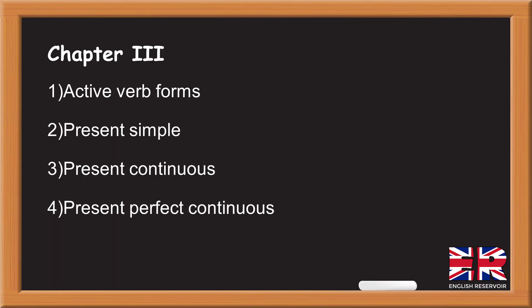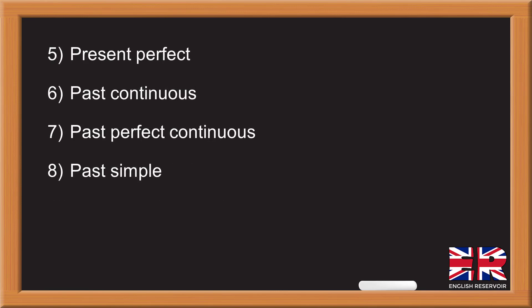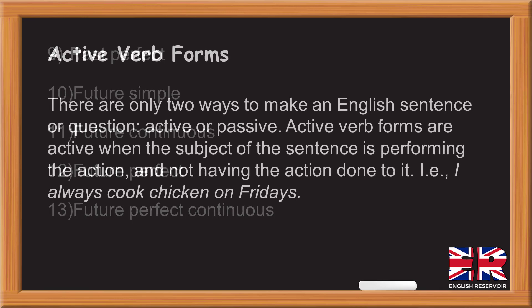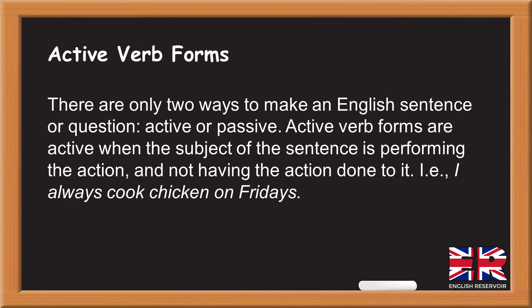Chapter 3: active verb forms. Present simple, present continuous, present perfect, present perfect continuous, past continuous, past perfect continuous, past simple, past perfect, future simple, future continuous, future perfect, future perfect continuous. Active verb forms: there are only two ways to make an English sentence or question — active or passive.